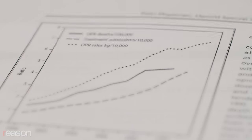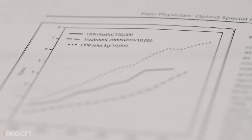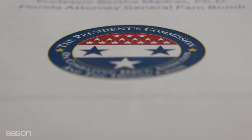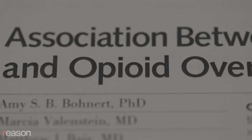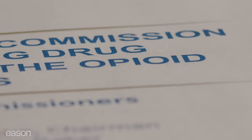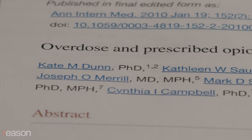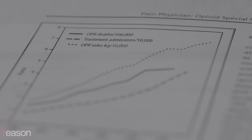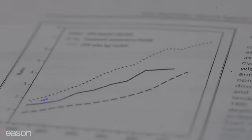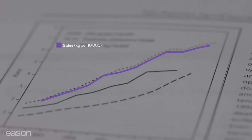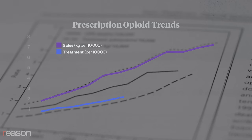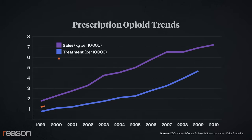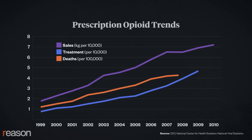This chart appeared in the 2017 President's Commission on Combating Drug Addiction and the Opioid Crisis to demonstrate a link between legal opioids like OxyContin and overdoses. One line shows opioid prescriptions, another the number of people being admitted to treatment centers for opioid abuse, and the third charts deaths from opioid overdoses.